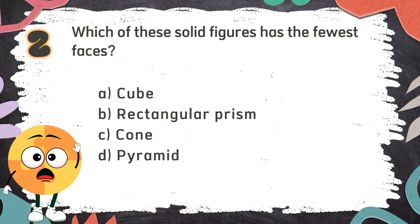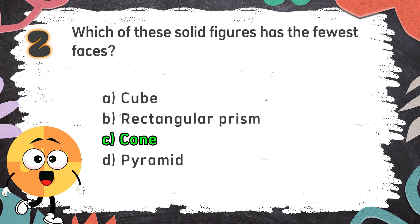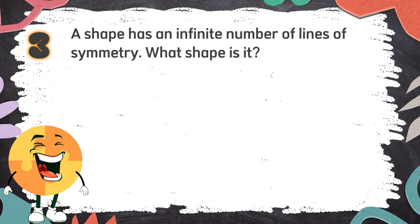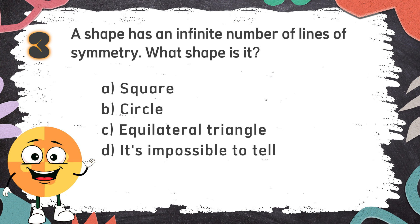The correct answer is C. Cone. A cone has only 2 faces: a circular base and a curved surface. Number 3: A shape has an infinite number of lines of symmetry. What shape is it? The choices are: A. Square, B. Circle, C. Equilateral triangle, D. It's impossible to tell.